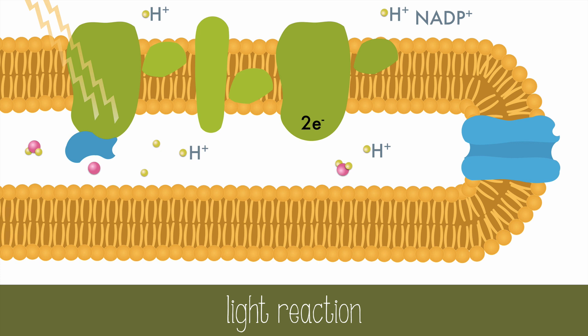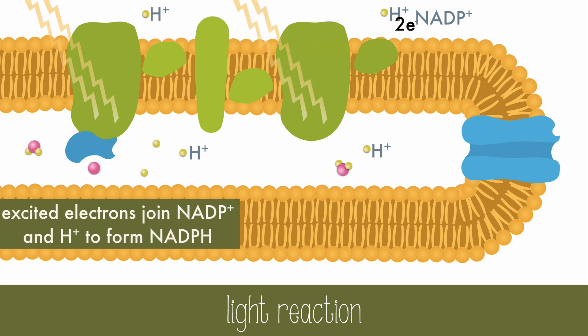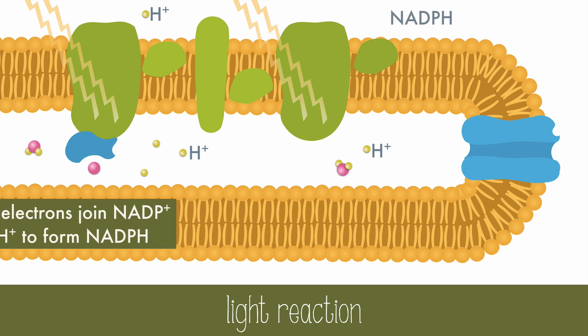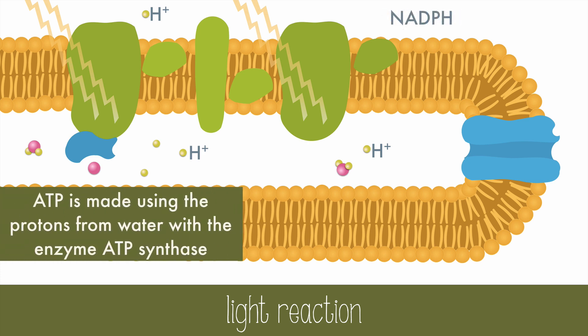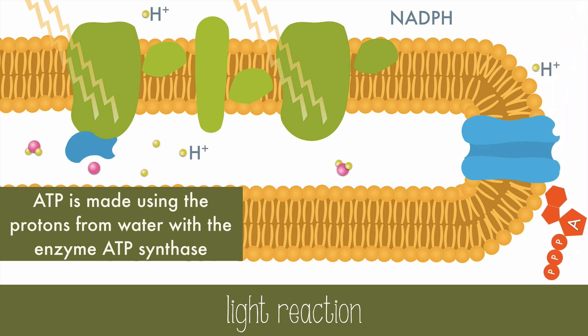Light strikes again and the electrons are excited and load onto an NADP+ with a hydrogen ion to become NADPH. ATP, the main energy currency of cells, is made using the protons from the water molecules, with the enzyme ATP synthase.